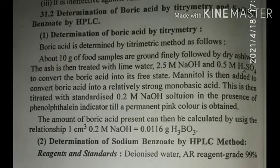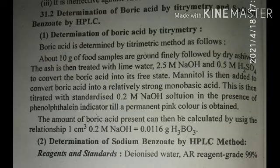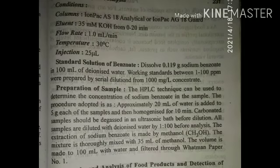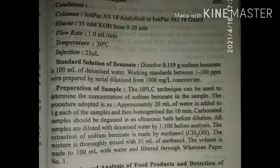For sodium benzoate analysis by HPLC, we use HPLC grade water, distilled water, and HPLC grade reagents. The column used is IonPac AS18 with an IonPac AG18 guard column. The eluant is 35 millimolar KOH, flow rate is 1 mL per minute, temperature is 30°C, and sample injection volume is 25 microliters.